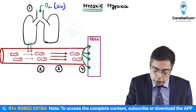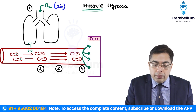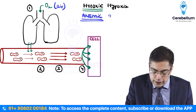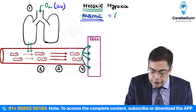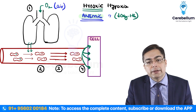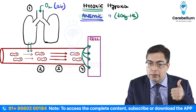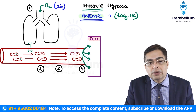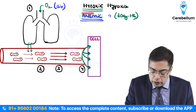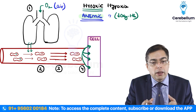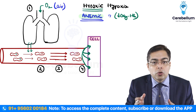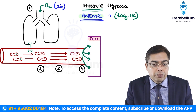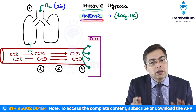A second possibility: the oxygen breathed in is fine, but there is a problem at the level of oxyhemoglobin formation — reduced oxyhemoglobin formation. This is called anemic hypoxia. It occurs when RBCs contain less hemoglobin, so less oxyhemoglobin is formed. By WHO criteria, an adult male is anemic if hemoglobin is less than 13 g/dL; an adult female if less than 12 g/dL. Anemia leads to anemic hypoxia.